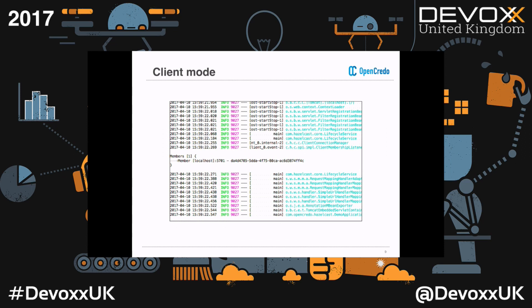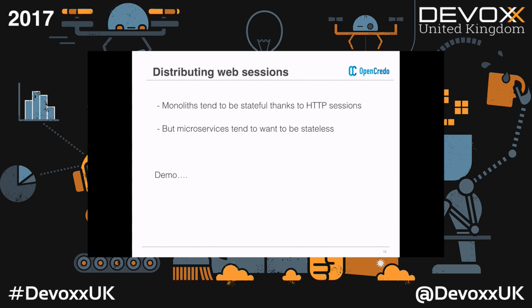Here is it starting up in client mode - in this case it found an instance running on port 5701. So, what are the things that Hazelcast can do to try and solve your distributed problems? One of the problems that monoliths tend to have, especially Java monoliths, is that they love their HTTP sessions. It's quite common to just simply store data in there - you do a search, store it in the session, and then retrieve it later. Having these sessions makes it much harder if you're using any sort of cluster management.